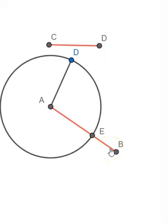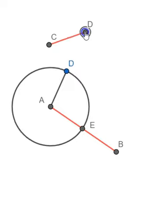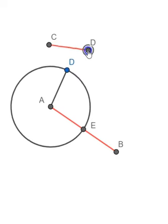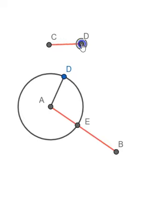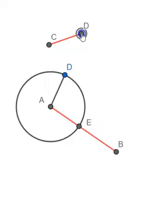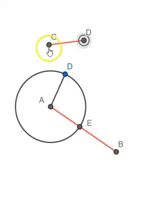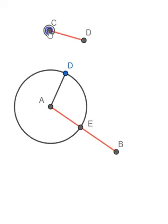So we have cut the line AB at point E so that AE is equal to CD. Now the fun part: I will catch hold of D and move it around. As I move it around, if you notice, as the length of CD changes, the length of AE also changes. I can move either C or D.